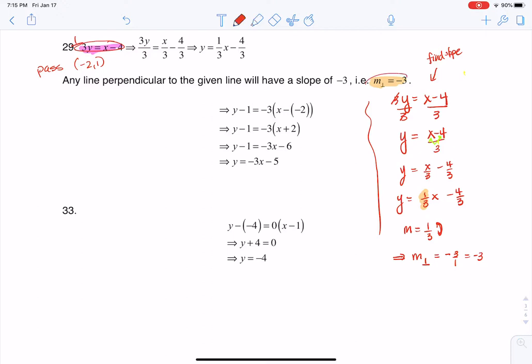So now we're getting down to here's my slope, and again, here's my point. So I'm going to put this into point-slope form. And point-slope form is y - y₁ = m(x - x₁).